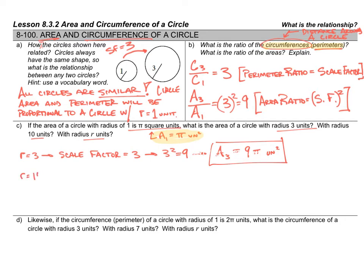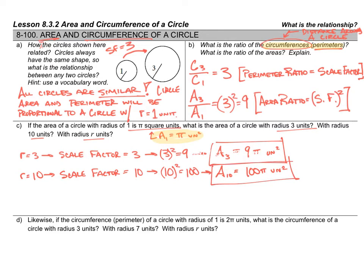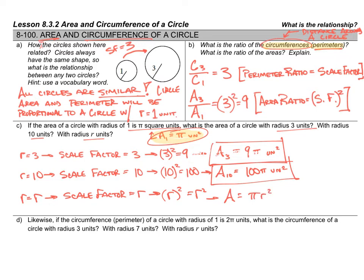For a radius of ten, the scale factor squared is one hundred, so the area is 100 times larger than pi square units — giving us 100 pi square units. For a generic radius r, the scale factor compared to a radius of one is r, the scale factor squared is r squared, and multiplying by pi — the unit circle area — gives pi times r squared square units. That's where the formula A = πr² comes from, since all circles are similar and the scale factor is just the radius compared to a circle with radius one.